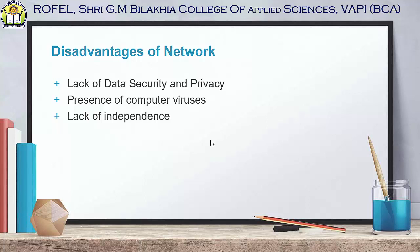The next disadvantage is lack of robustness. If a computer network's main server breaks down, the entire system becomes useless. If the server is down, we cannot access the network or get information. For example, if you want to fill an admission form but the admission server is down, you will not get a response. Also, if a bridging device or central linking server fails, the entire network becomes useless. If the router breaks, then the entire network is down.